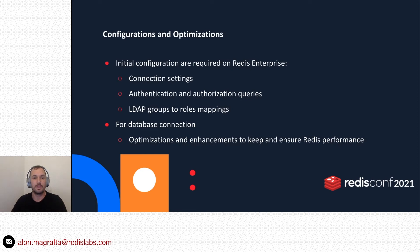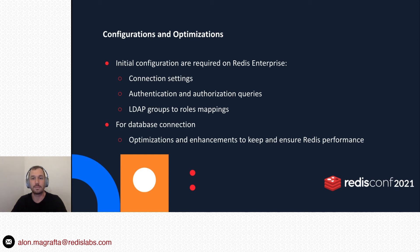To enable the LDAP integration, you will need to configure the following configurations just one time: connection settings, allowing you a secure connection to your LDAP server; authentication and authorization queries; and the LDAP groups to role mapping. It is very important to mention that to ensure Redis' highest performance, Redis Enterprise uses several optimization mechanisms, maintaining low latencies and high throughput even with high volume of connection requests and operations. These optimizations are also preventing Redis Enterprise from jamming the LDAP server.